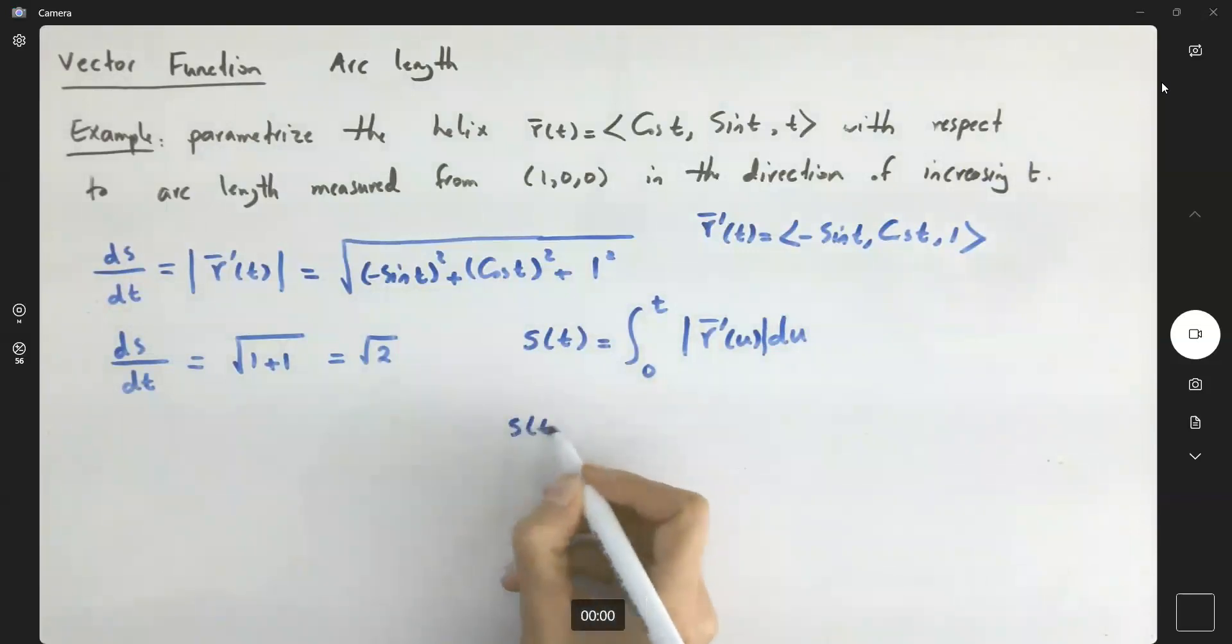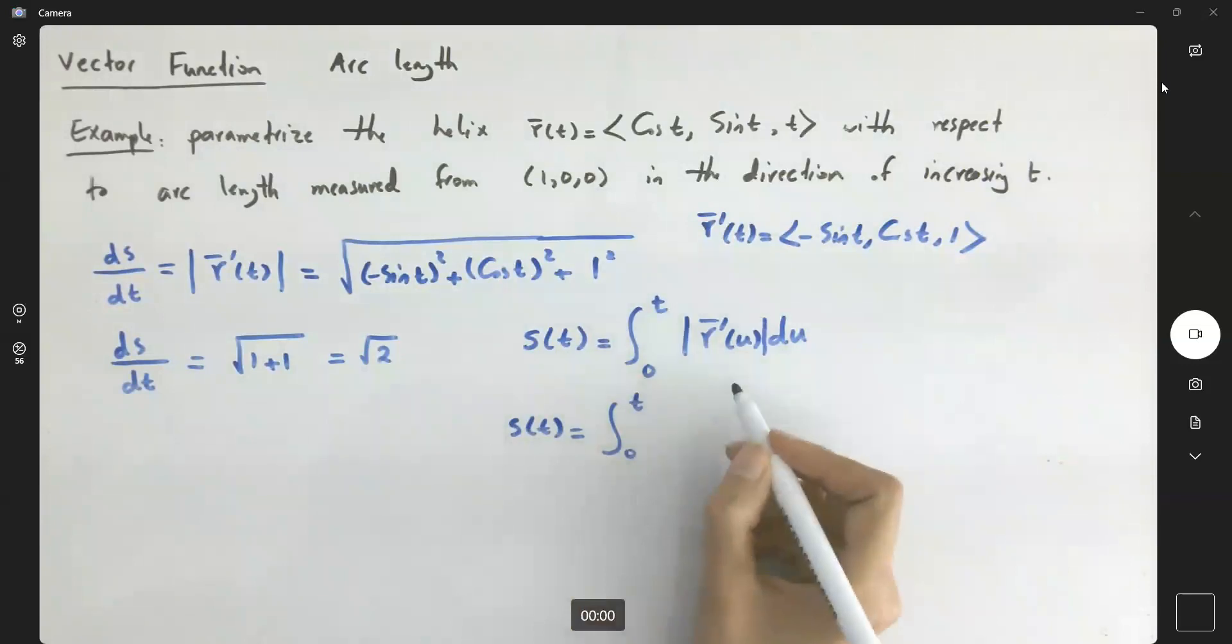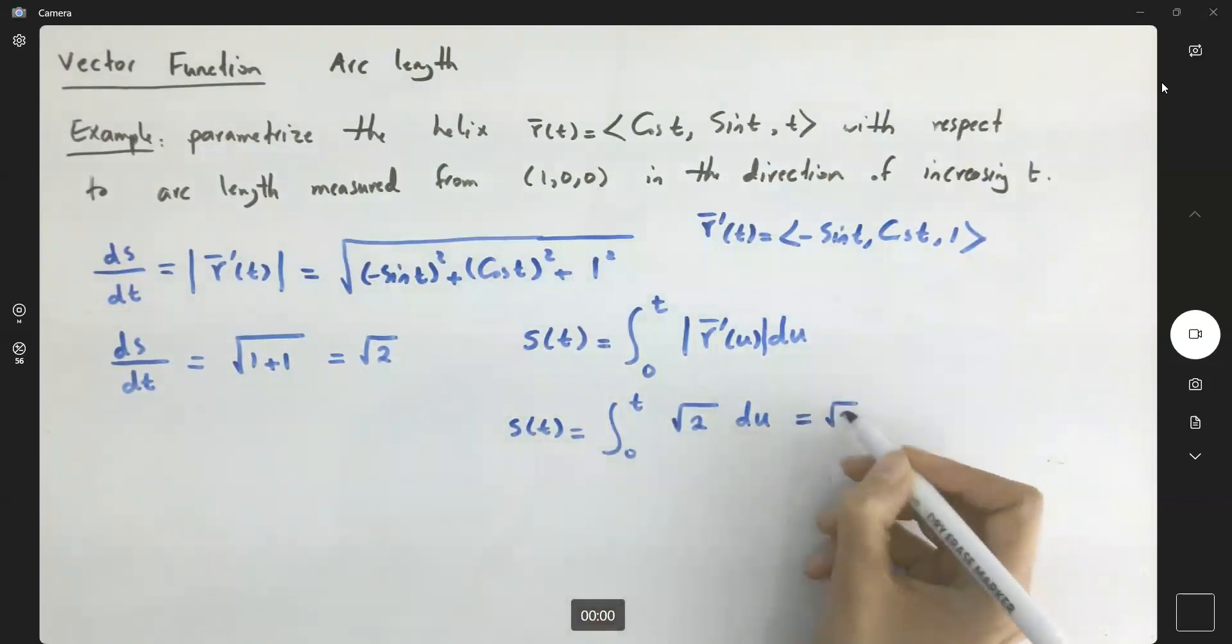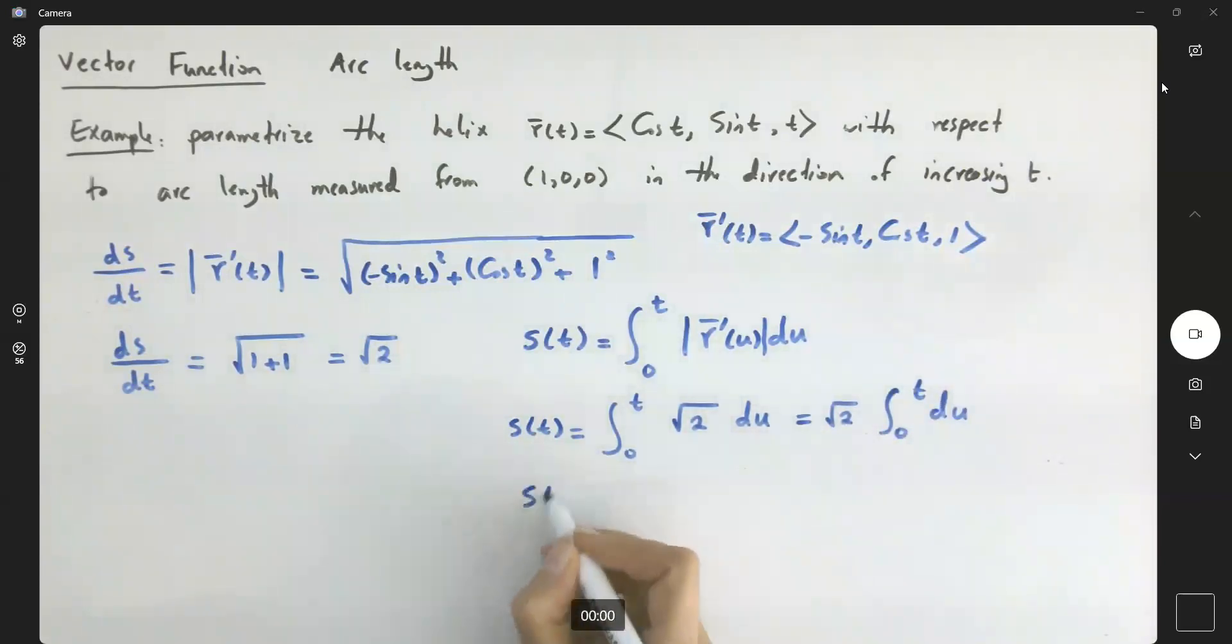s(t) becomes integral 0 to t, we already have this value which is square root of 2, du. You get square root of 2 times the integral from 0 to t of du, which equals square root of 2 times t.